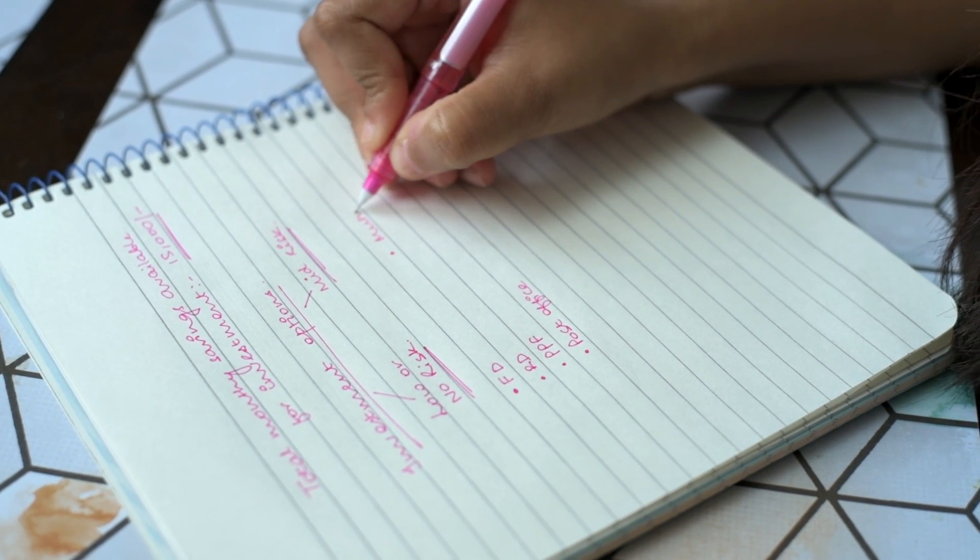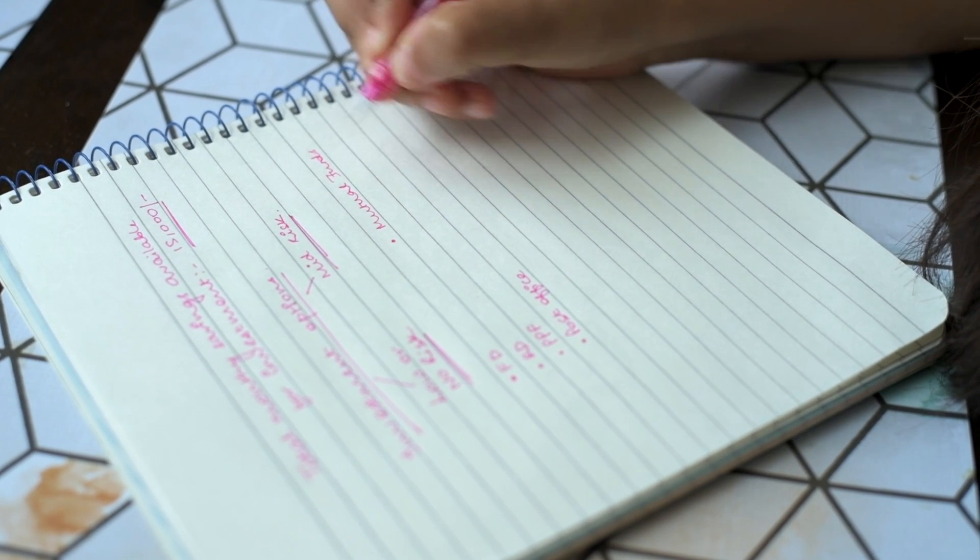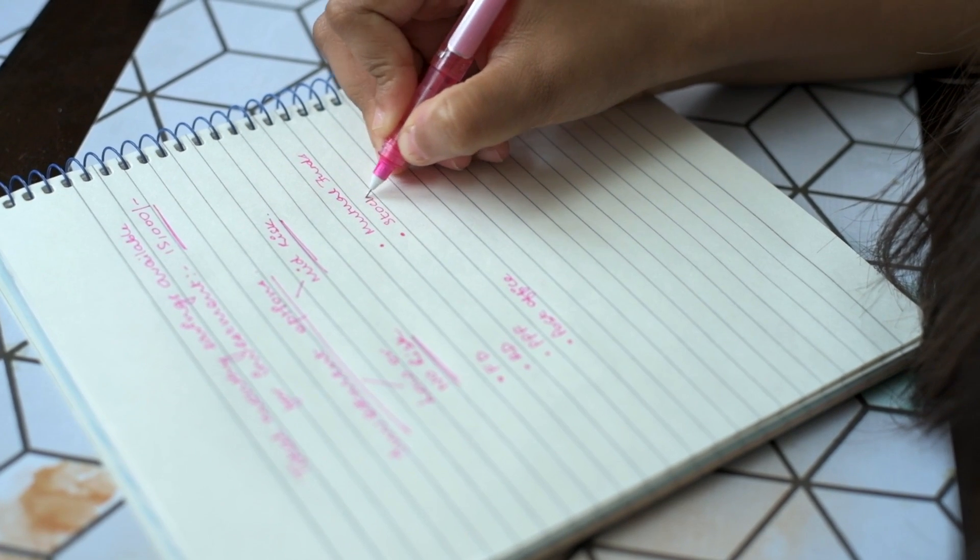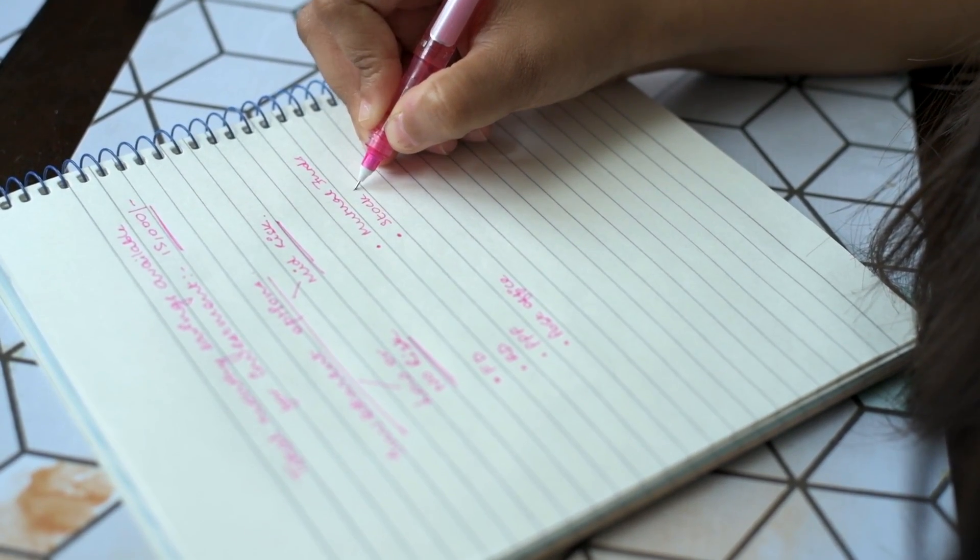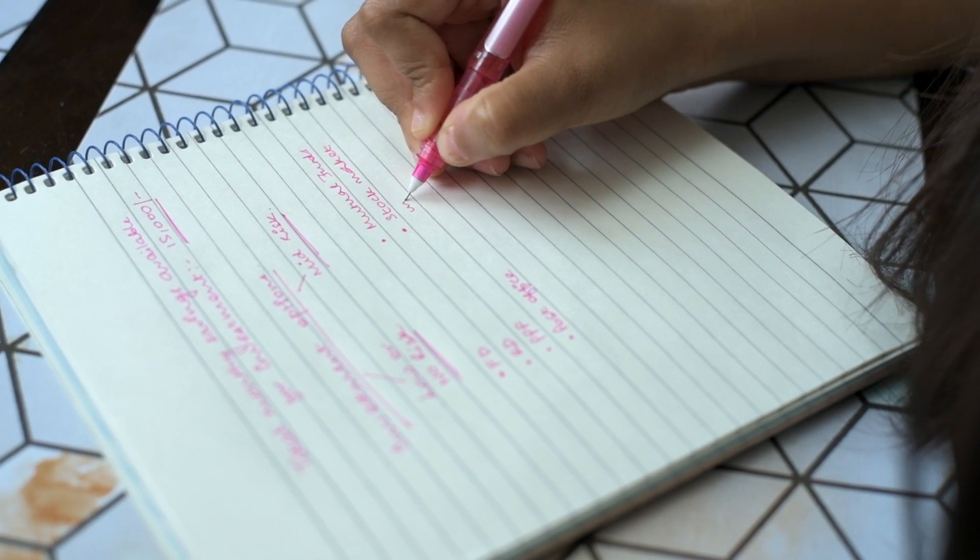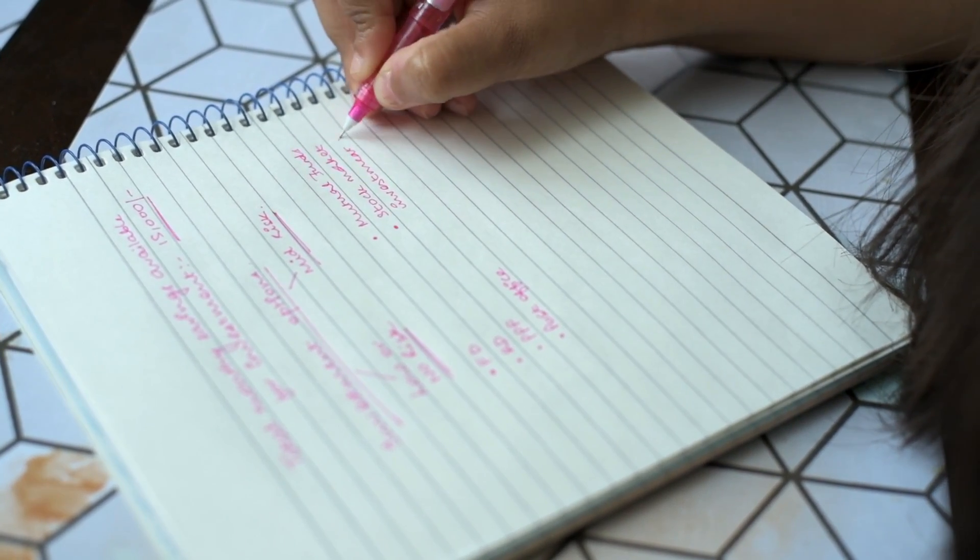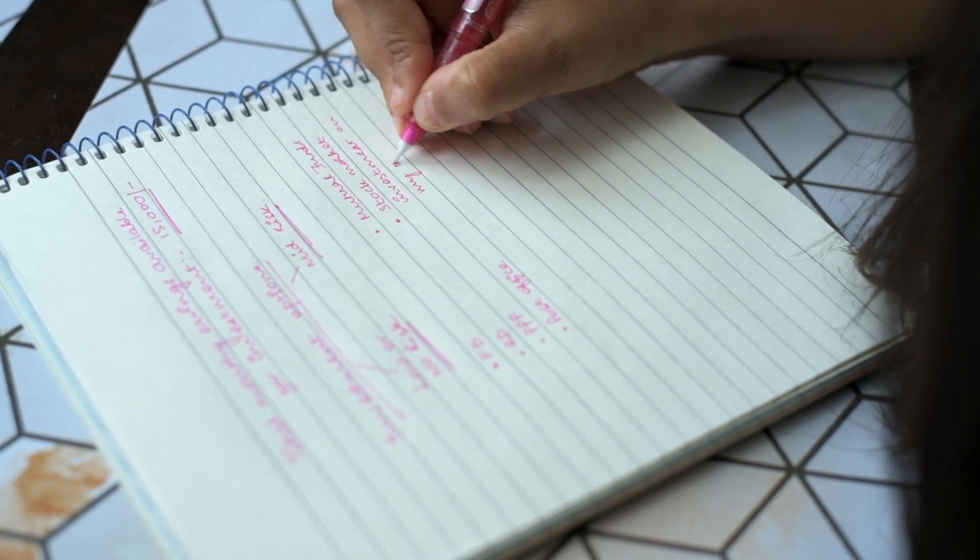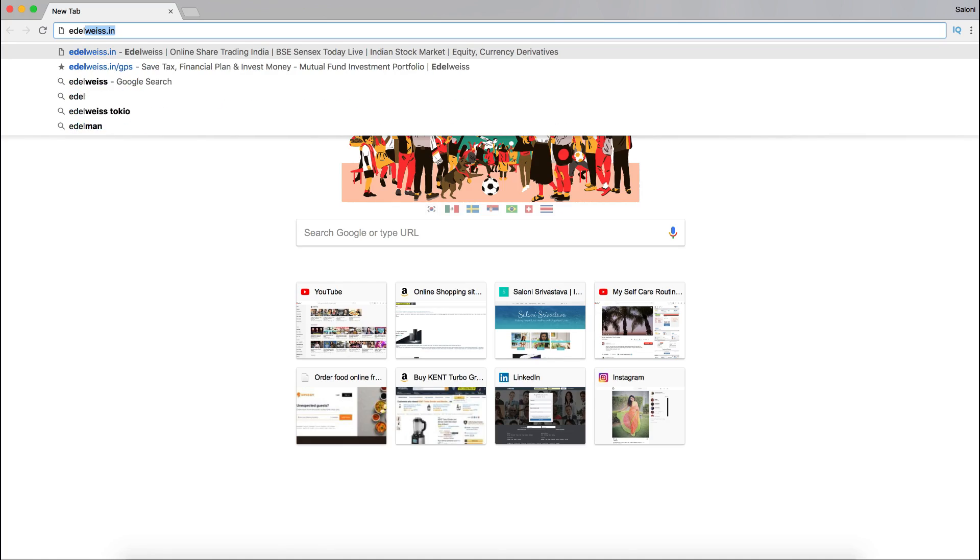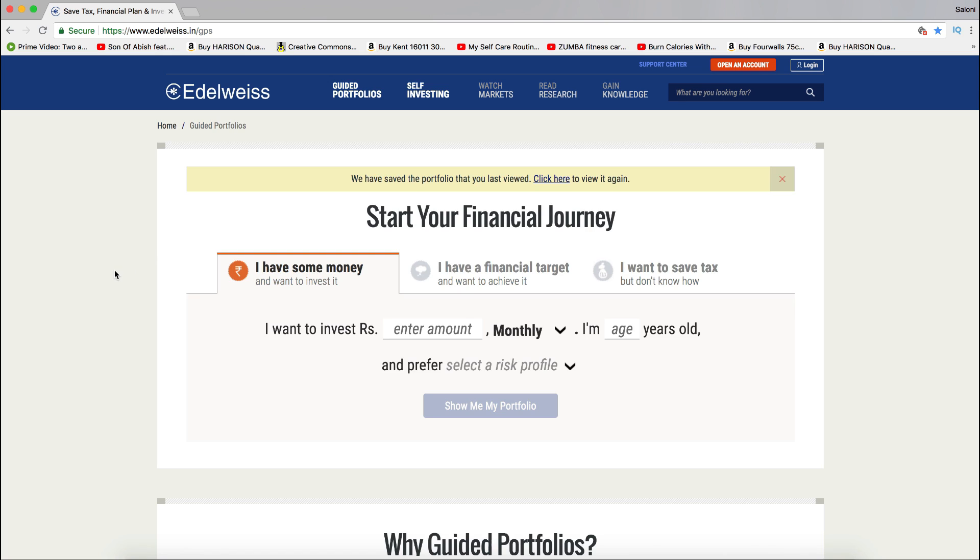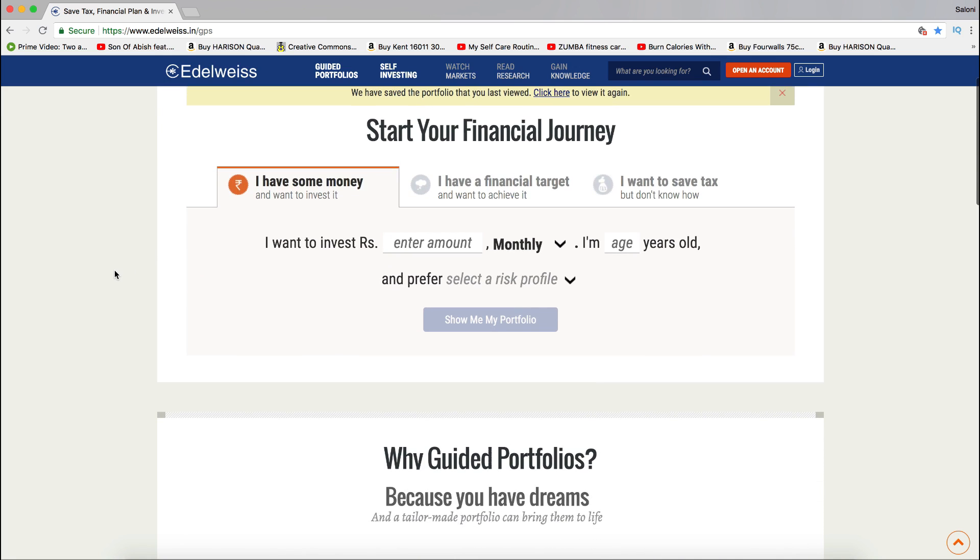But in my opinion, while an RD or an FD are definitely safe options, they provide you very little returns. I would suggest investing most of your money in mutual funds. Mutual funds provide much higher returns because they are linked to the stock market and the returns definitely change with increase or decrease in the stock prices. Now here's how you can go about choosing the right investment option for you in mutual funds. There is a mutual funds predictor and calculator by Edelweiss which I find very useful. I'll definitely leave a link to this in the description box below.